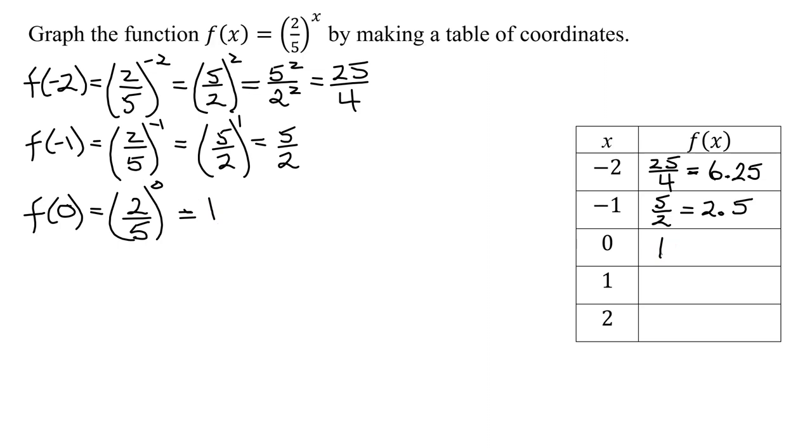Now when x is one, f of one is two-fifths raised to the x, which is one, so it is just two-fifths. So f of one is two-fifths, otherwise known as 0.4.